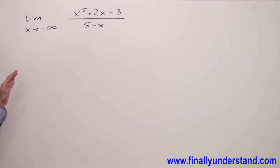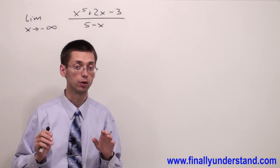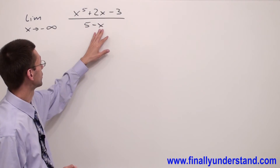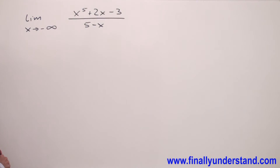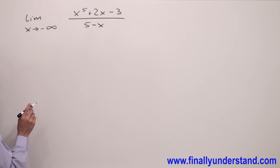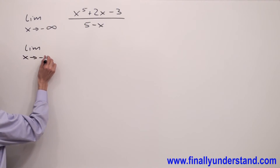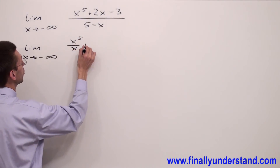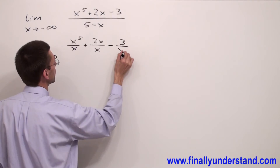Let's look at this next example: we have limit with x going to negative infinity. We always look at the denominator — the polynomial has x with power 1 (invisible 1). So we divide the polynomial from the numerator by x and the polynomial from the denominator by x. We write limit x going to negative infinity with x to the fifth over x, plus 2x over x, minus 3 over x.